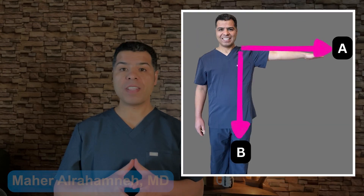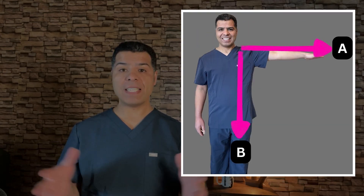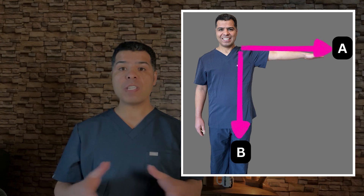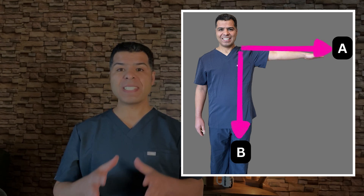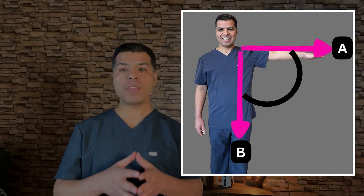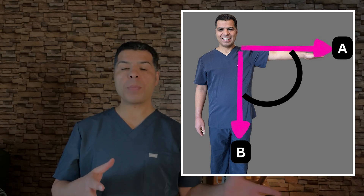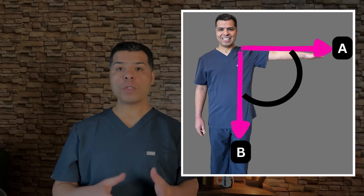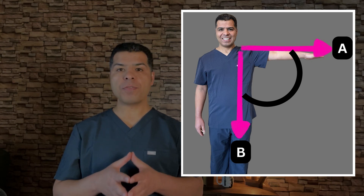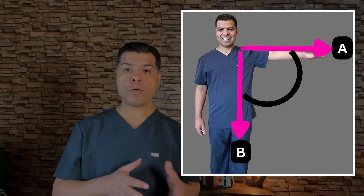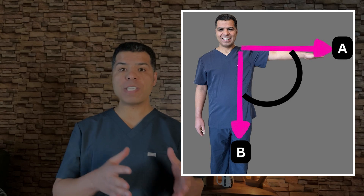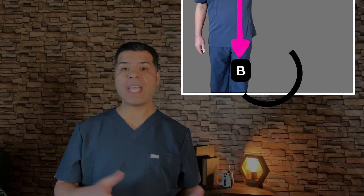If I have two forces, force A going in the direction of my stretched left arm and force B going in the direction of my left leg while standing, the direction of the average of these two forces will be somewhere between these two forces — somewhere between my stretched left arm and left leg, and closer to the bigger in magnitude force. If force A is bigger than force B, the direction of the average will be closer to A, and vice versa.